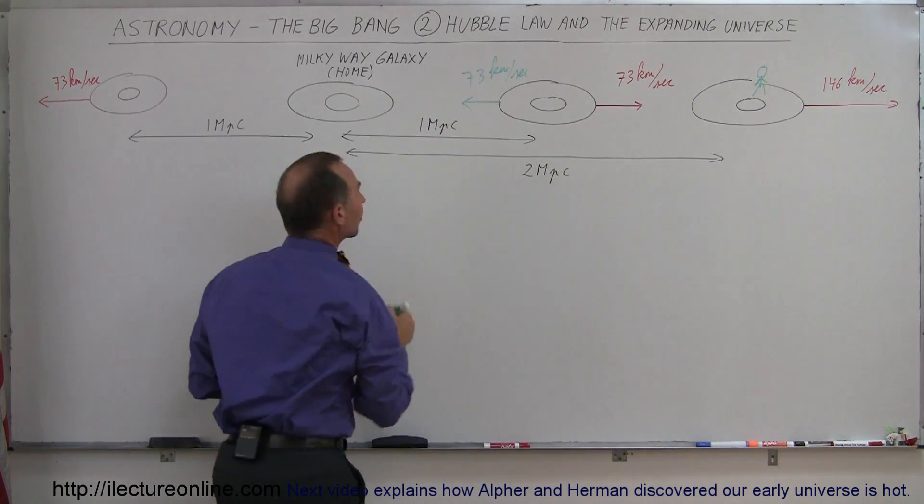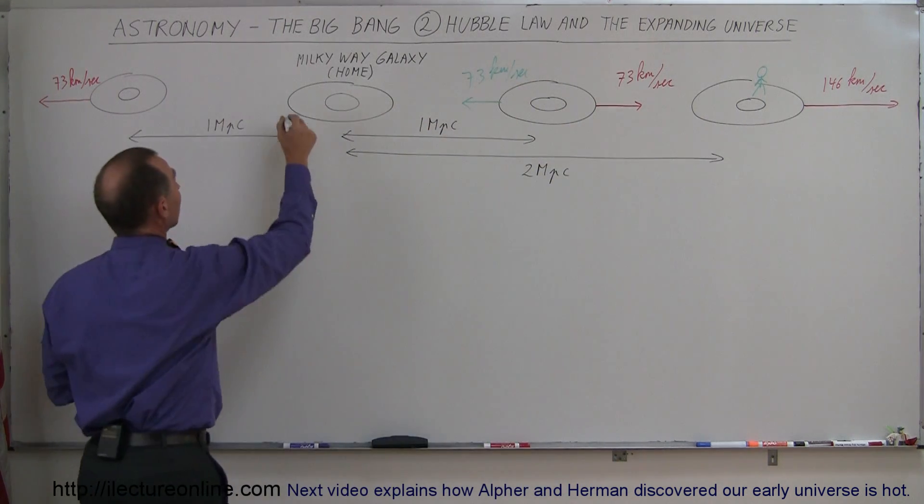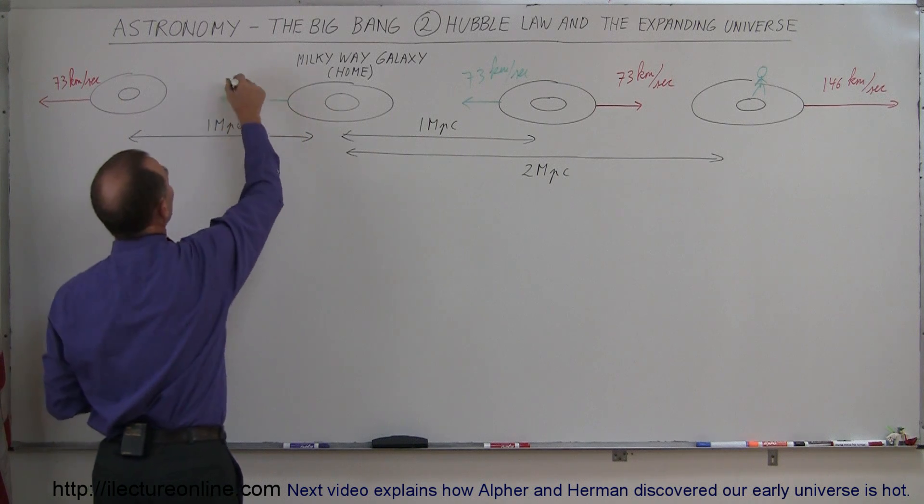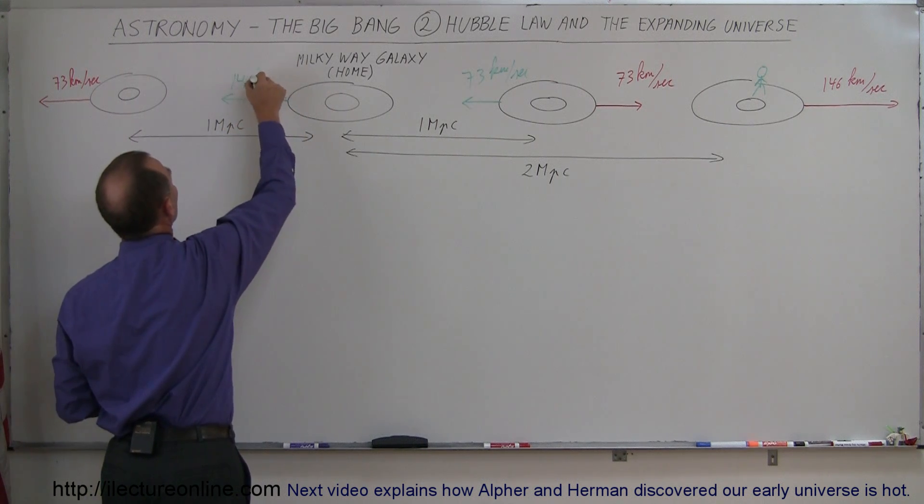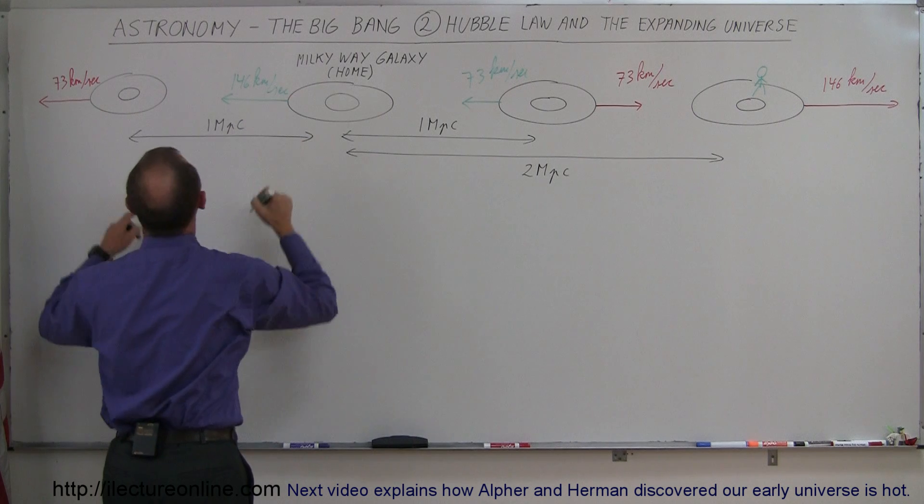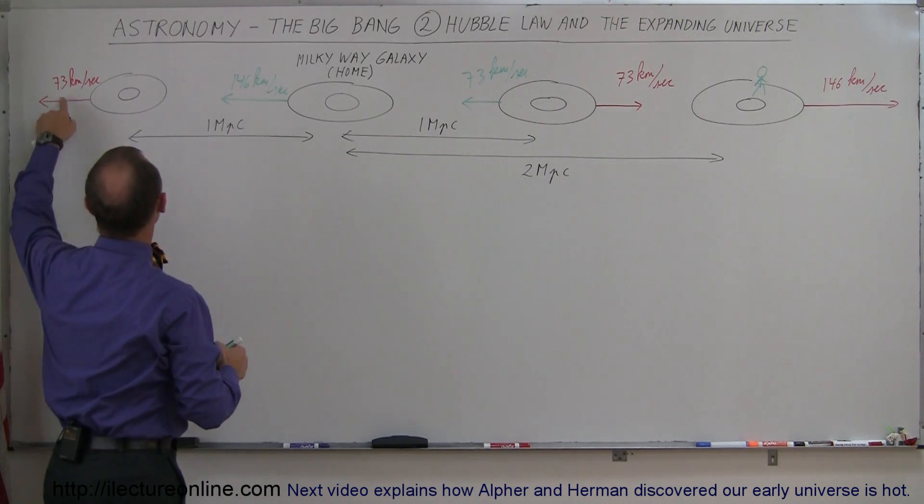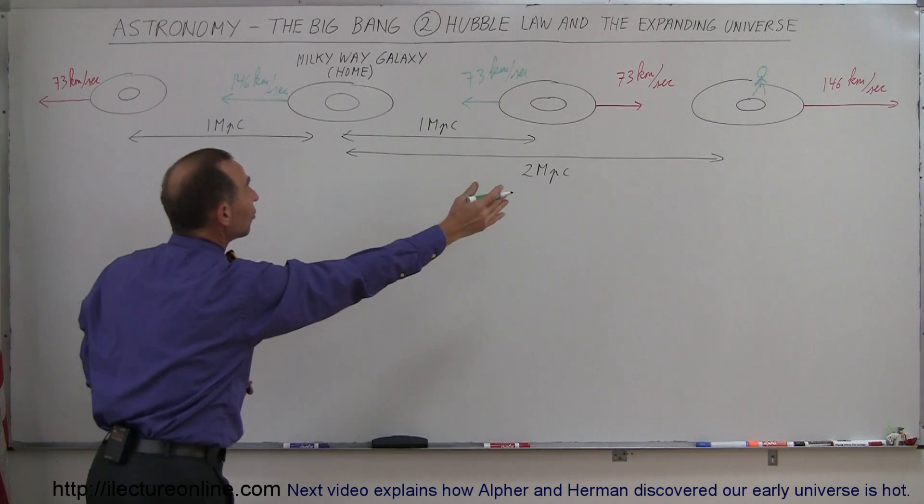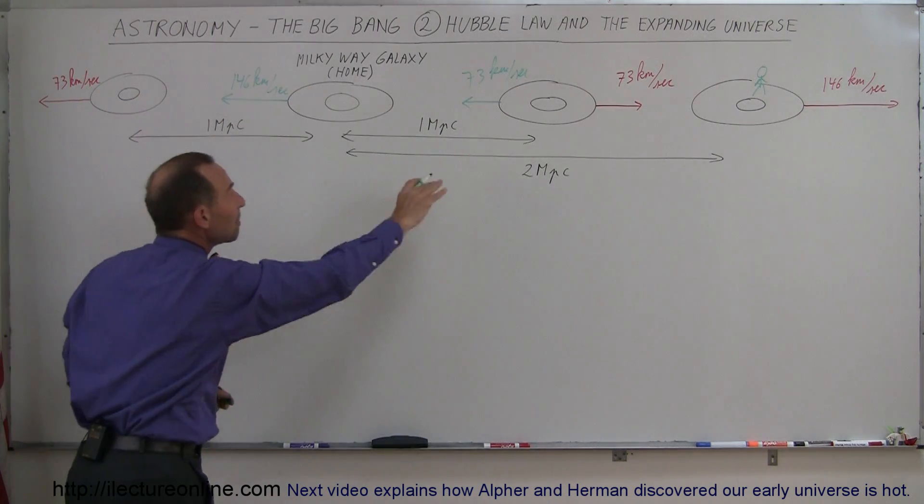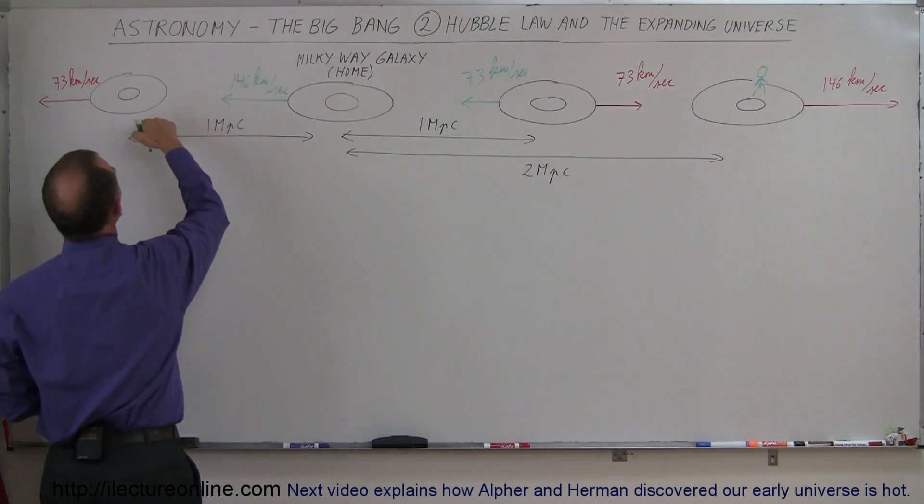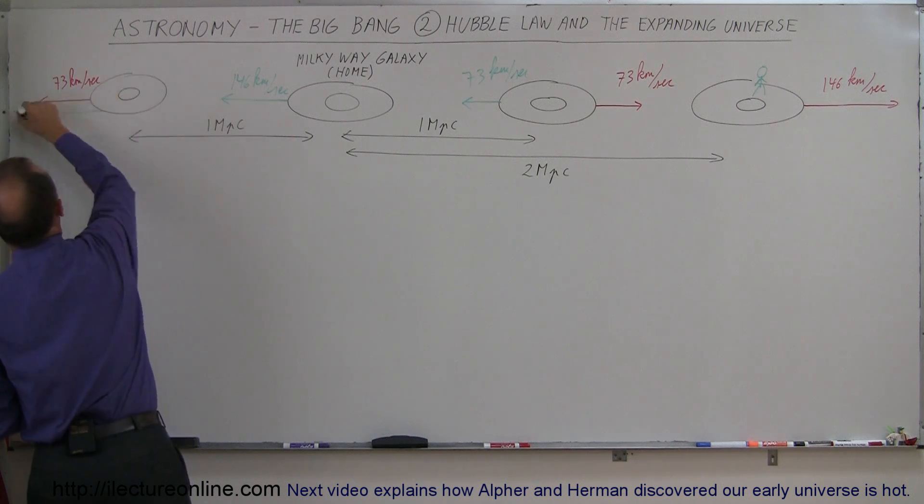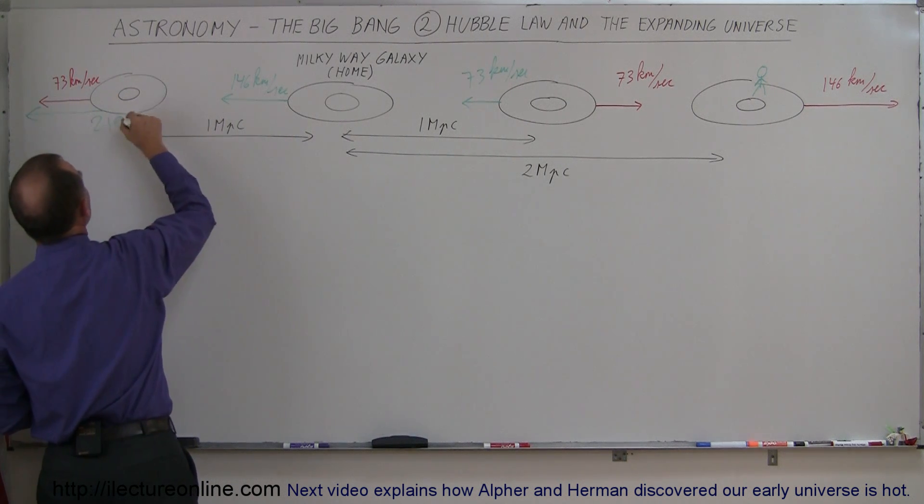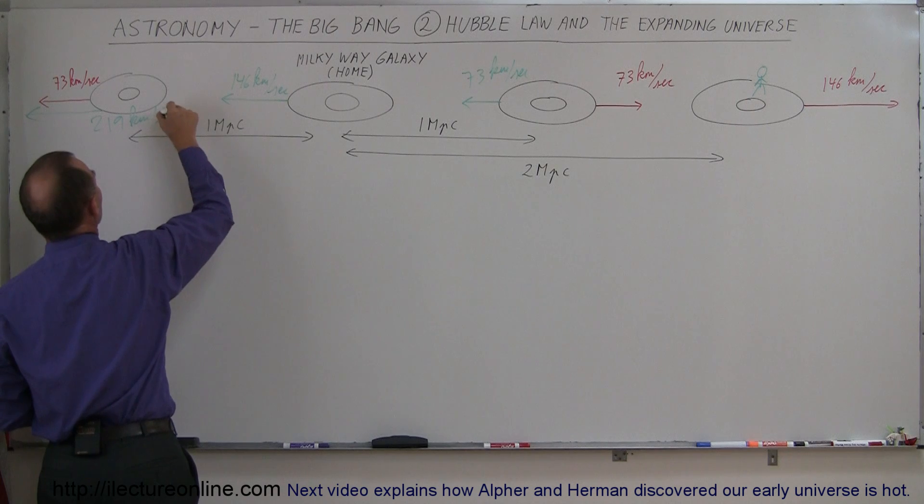And then he'll look at our Milky Way galaxy, and according to him, our Milky Way galaxy appears to be moving away at 146 kilometers per second. And then he would be looking at this galaxy, which to us appears to be moving away at 73 kilometers per second. But to the alien, since that galaxy is 3 megaparsecs away, that galaxy would appear to be moving away at 219 kilometers per second, and so forth.